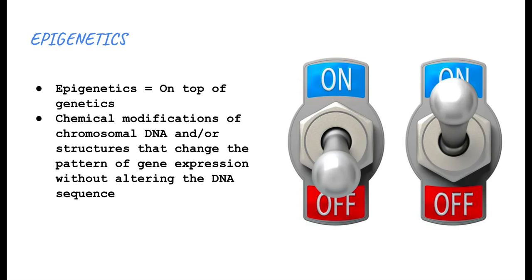Epigenetics is basically 'on top of genetics' — epi being a Greek word meaning 'on top.' These are chemical modifications of chromosomal DNA and/or structures that change the pattern of gene expression without altering the DNA sequence. The main thing to understand is: without altering the DNA sequence.